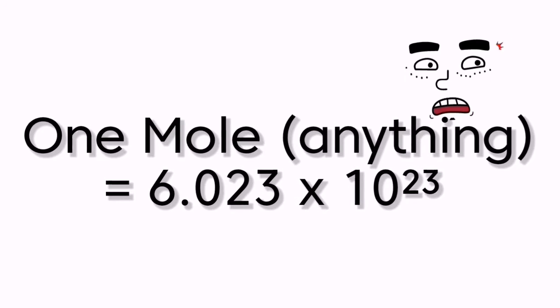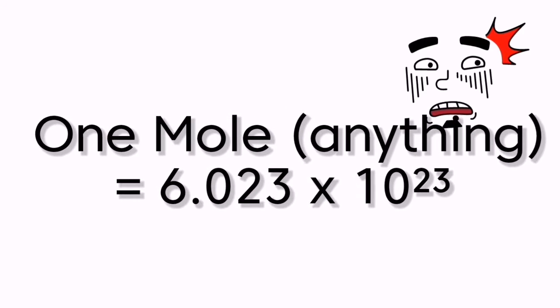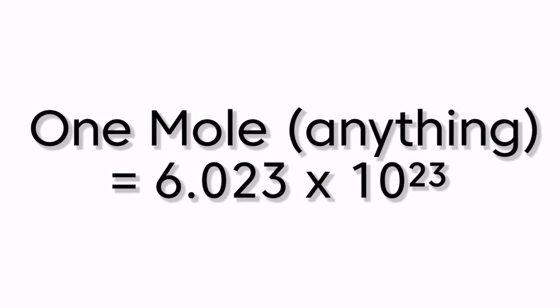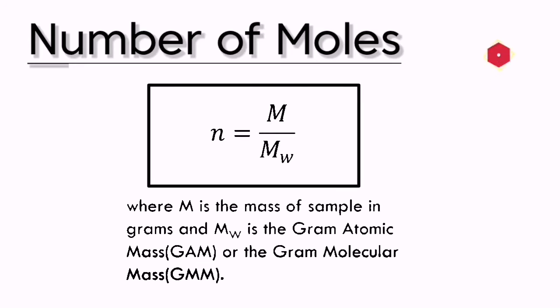Don't ask me if someone really calculated or counted those. Here's one more noteworthy formula: the number of moles, denoted as n, equals the mass of the sample divided by the molecular weight of that sample. Molecular weight here refers to the gram atomic mass (GAM) or gram molecular mass (GMM) of the sample.